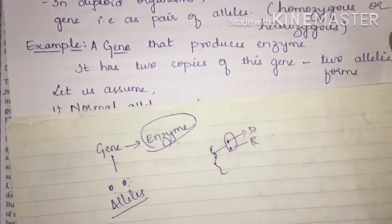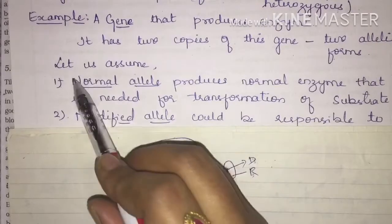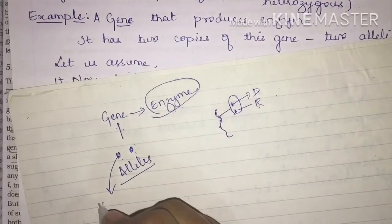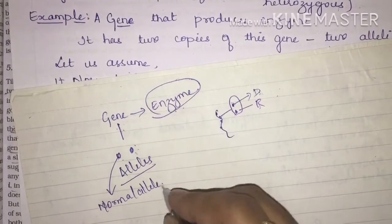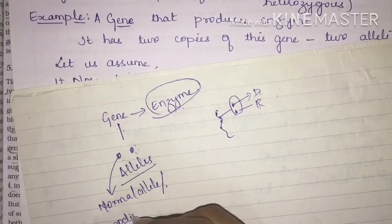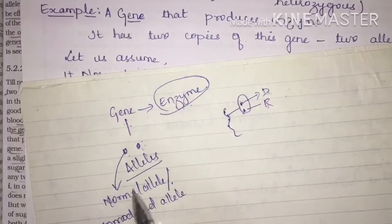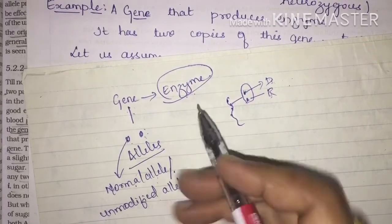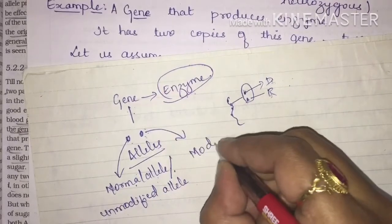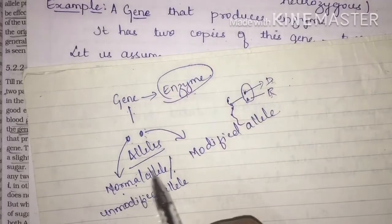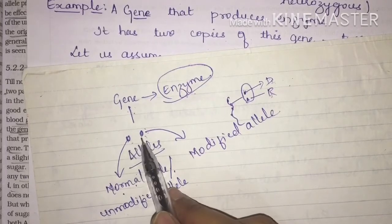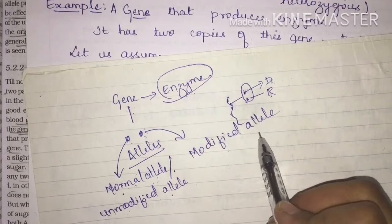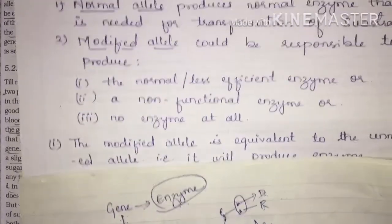Let us assume that one is a normal allele — also called an unmodified allele — meaning it has not undergone any changes. The other one is a modified allele, meaning it has got some changes. So this gene has a pair of alleles: one is the normal or unmodified allele, and the other is the modified allele.